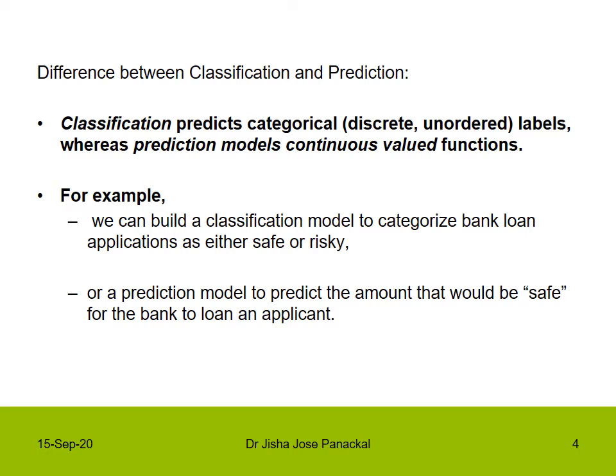This is a kind of prediction model to predict the amount that would be safe for the bank to loan an applicant. That is, the loan amount can be predicted for each and every applicant — this is a numeric kind, where a continuous valued function is used. So this is an example of a prediction model.